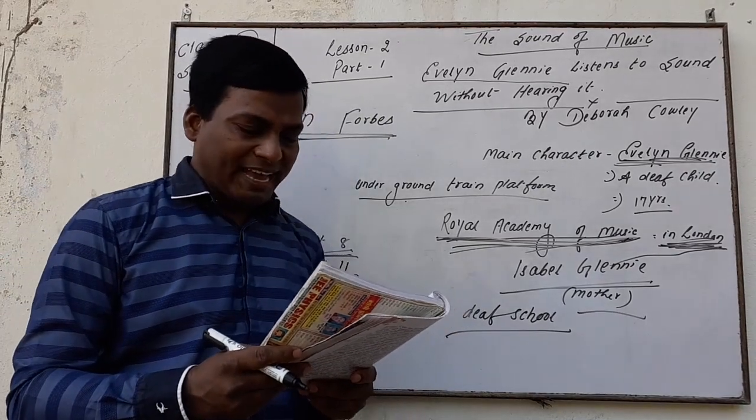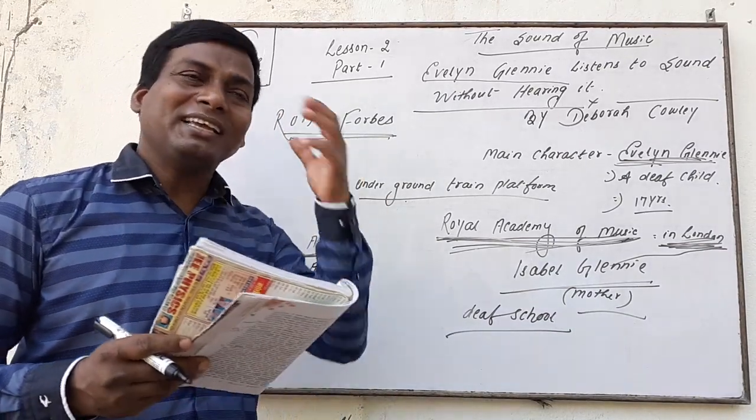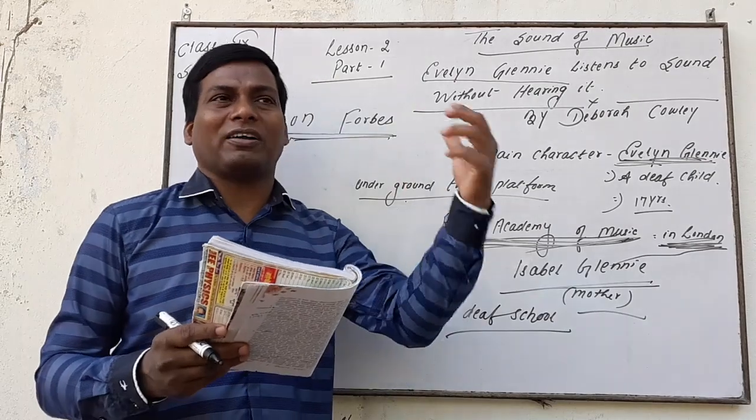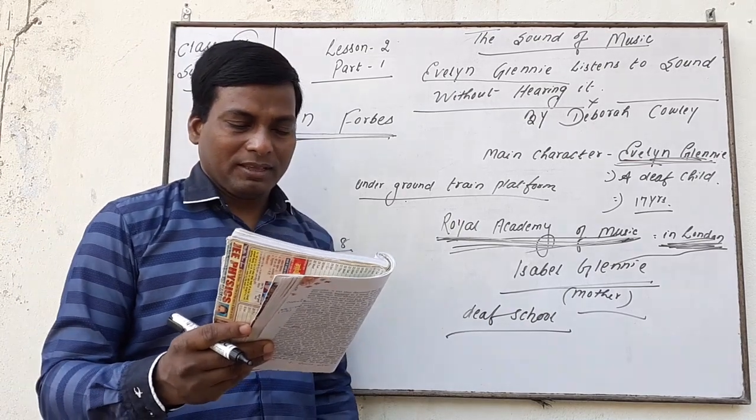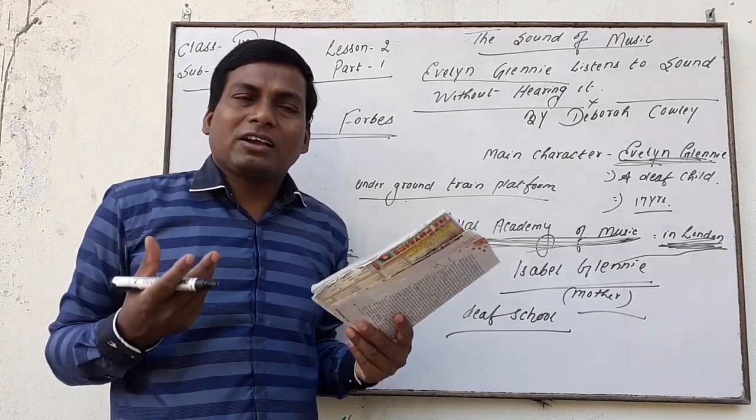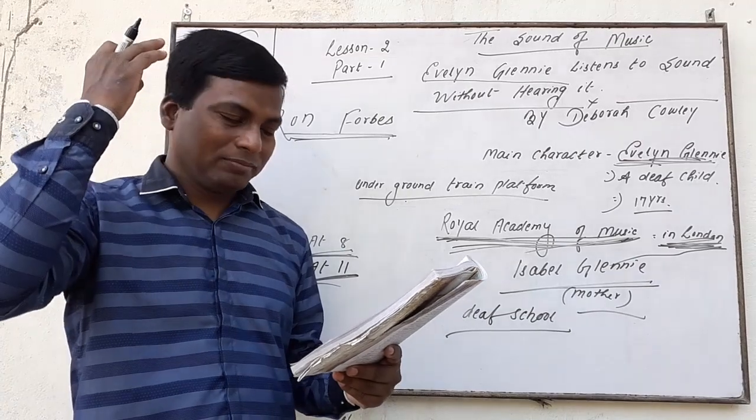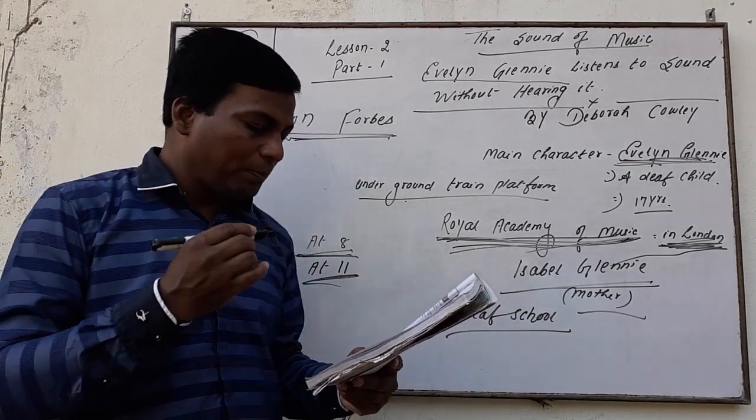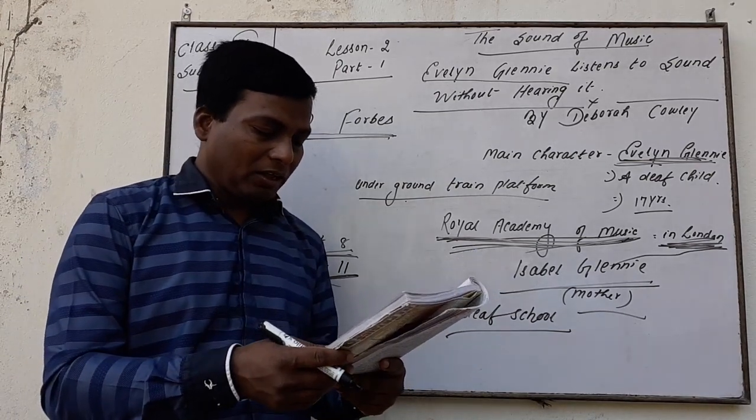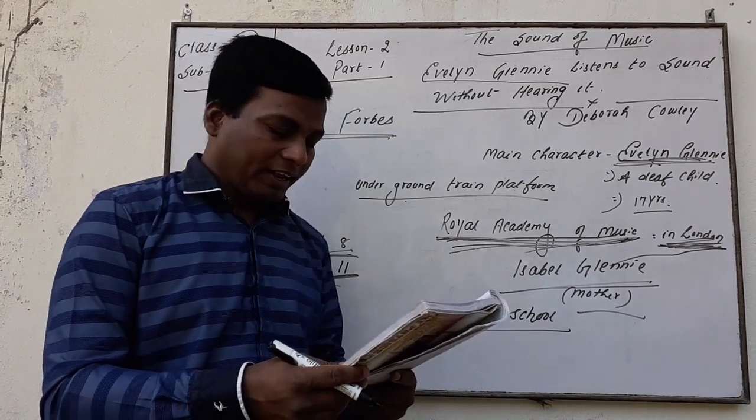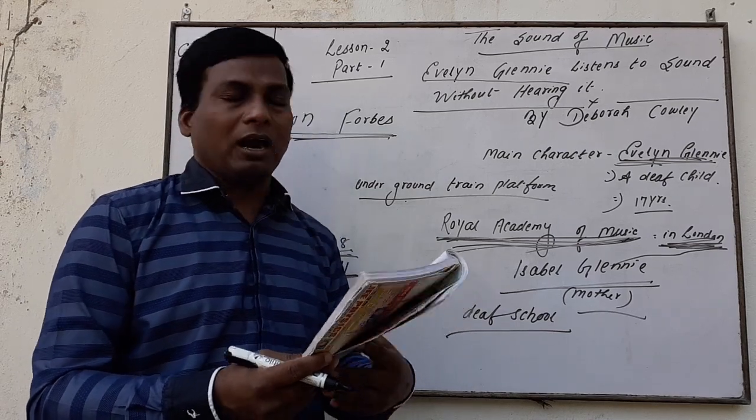As for music, she explains, it pours in through every part of my body. So she realized the music in each and every part of her body. Though she was not able to hear, but she was able to realize. It tingles in the skin, it causes sensation in the skin, my cheekbones and even in my hair. She can sense the sound passing up the stick into her fingertips. By leaning against the drums she can feel the resonance flowing into her body. On a wooden platform she removes her shoes so that the vibration pass through her bare feet and upper legs. When she was giving the performance, when she was playing the music, she was not using any kind of shoes. She was with her bare foot so that she would realize, she would sense the sound of the music.